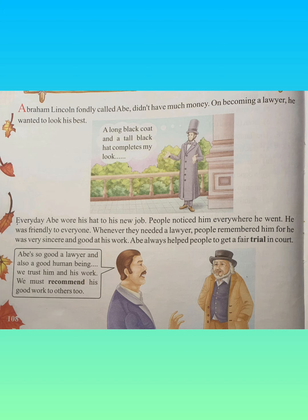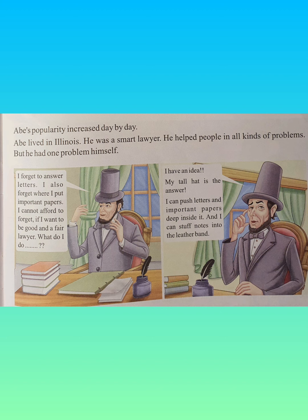Abe always helped people to get a fair trial in court. Underline trial — trial means an examination of evidence by a judge; these are the cases in the court. So he always helped people to get a fair trial. People used to say he was a very good human being and they recommended — underline recommend — recommended means suggested; they suggested his name to others also, that people should take him as their lawyer. Abe's popularity increased day by day.